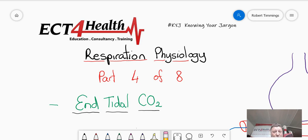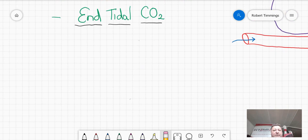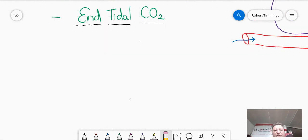So, what does it mean? Well, let's open up. First of all, let's understand the terminology. End means at the end, and tidal means the breath. So, if I breathe in, inspiration, and I breathe out, expiration. At the end of expiration, could I measure the carbon dioxide in my breath? And the answer is, yes, I can.